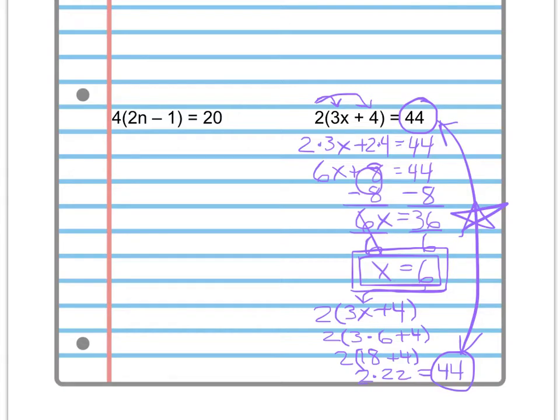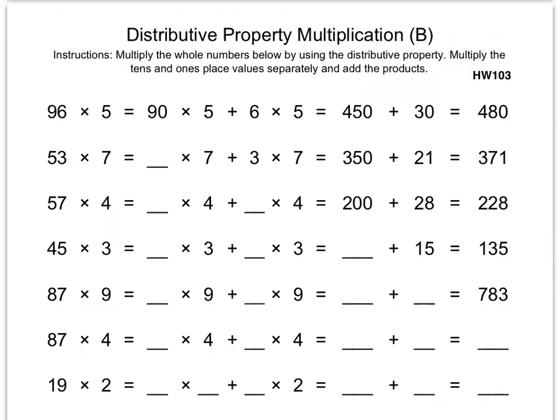We're going to go ahead and move on to the other side. Here we are on the other side. Distributive property, multiplication, part B. Instructions, multiply the whole numbers below by using the distributive property. Multiply the tens and ones place values separately, and add the products.